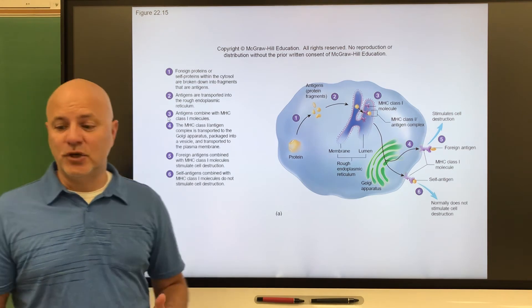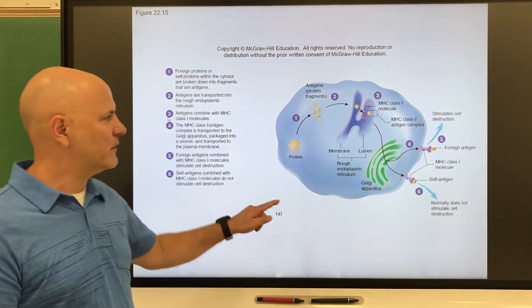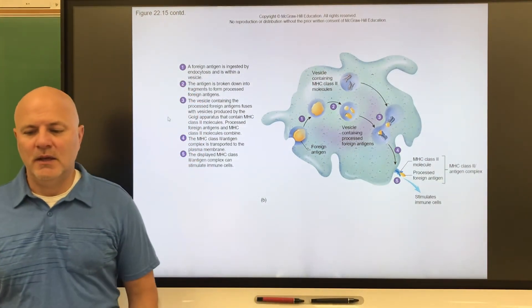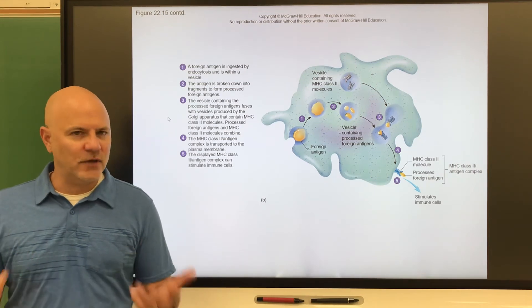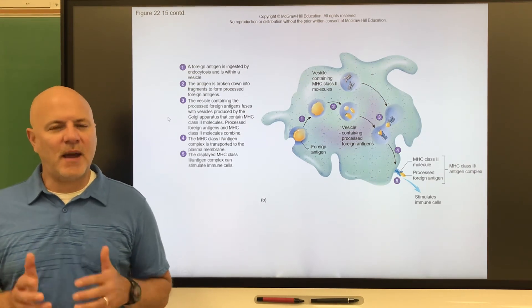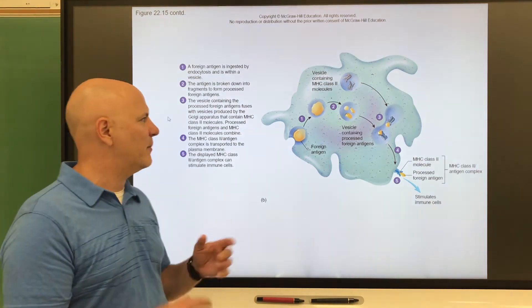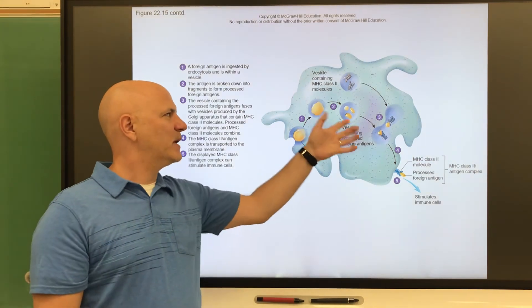Next is MHC two proteins. These are on antigen presenting cells or macrophages. So this is shown here. What's going to happen in our immune response, I'm going to talk about this real soon, but what happens here is our macrophage is going to engulf an antigen and the pathogen that's on it. Here's our foreign antigen pathogen. We kill it.